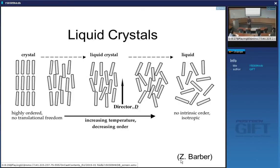In an LCD, light passes through an analyzer and a polarizer that are crossed, so normally no light goes through. When you apply an electrical field, the molecules align along one of those grids and therefore allow light to pass through.